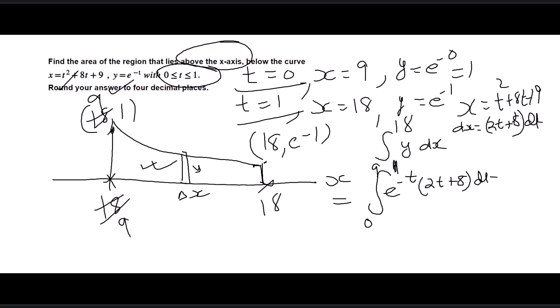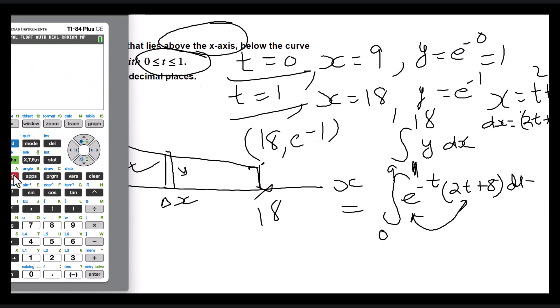If you're doing it by hand, you will have to use integration by parts, but in this case we are allowed to use a calculator because they asked to round your answer to four decimal places. Let's go to math, number 9 gives us definite integrals. We're going from 0 to 1, e to the negative x times 2x plus 8, and that gives us approximately 5.5854.